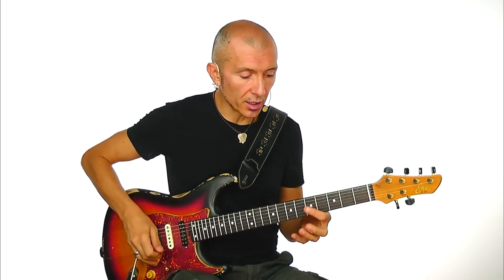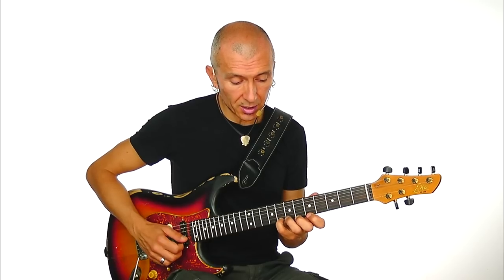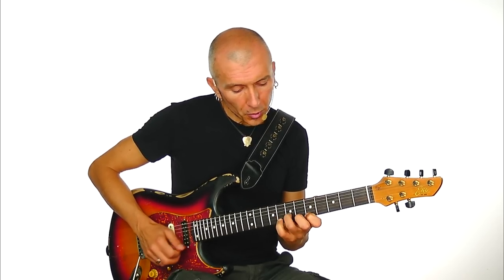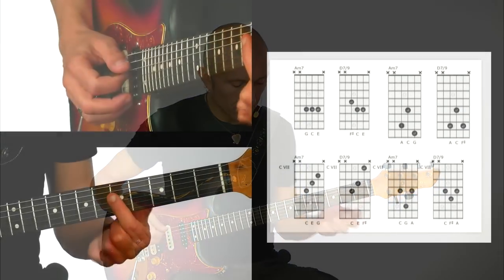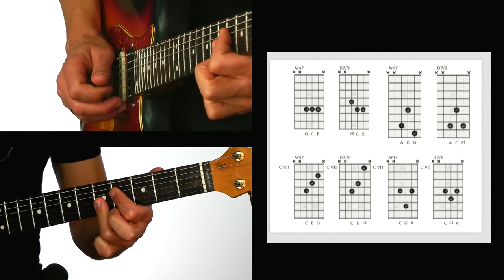Now we have to find a tension note. In this case the note is G for Am7, which is the minor seventh, and F sharp for D7, which is the major third. So these are lead tones. We can use these notes to play some riffs and fingerings — A minor seventh and D7 ninth.